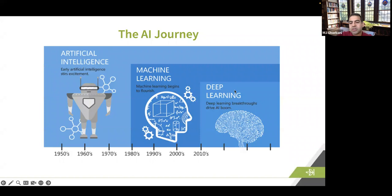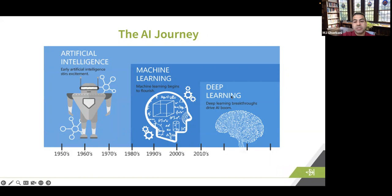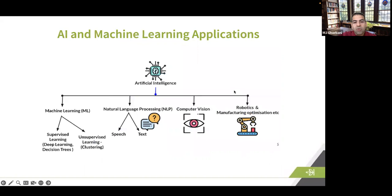Timeline-wise, since the 2010s, deep learning has become more and more popular and is probably the prominent technology today. When you unlock your iPhone with your face, when Netflix recommends the next show, or when Amazon recommends what you should buy — all of those are usually being done by deep learning. ChatGPT is another deep learning technology being used for processing text and natural language.